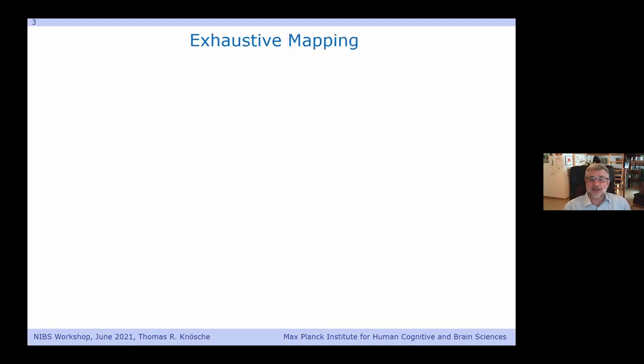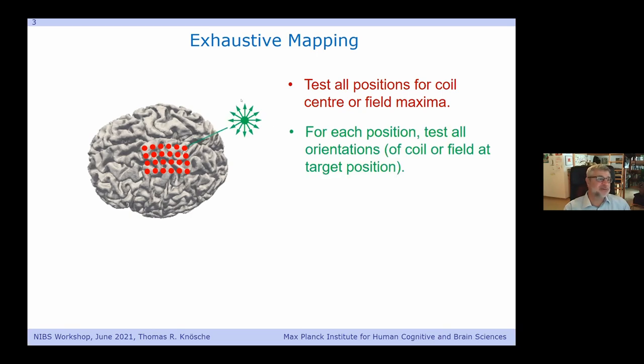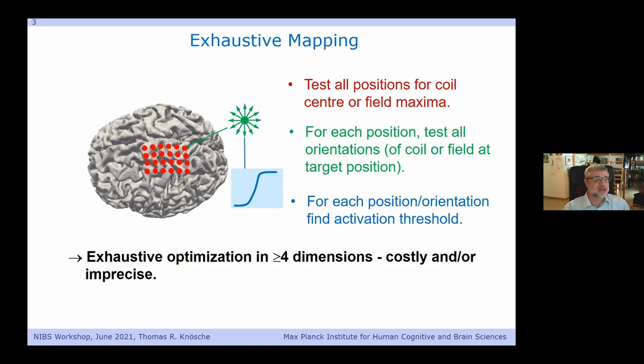Classically, this is done by exhaustive mapping. I define a region of interest, define a grid of points, and place my coil point by point, either by projection of the coil center onto the cortex or, more sophisticated, if I have on-the-fly field calculation, I can place the field maximum on each position. But I would also have to scan the orientation space, trying out all different orientations. And finally, at each position-orientation combination, I would have to map out an input-output relationship by finding a threshold or mapping an entire input-output curve. This is exhaustive optimization in four or more dimensions, which is either costly or imprecise or both.